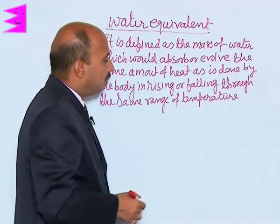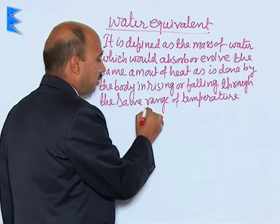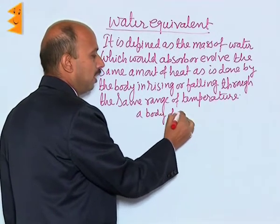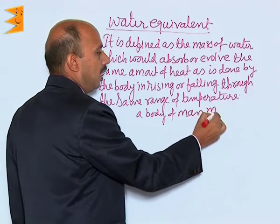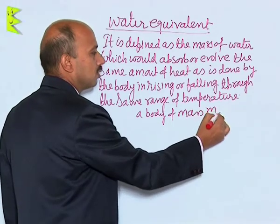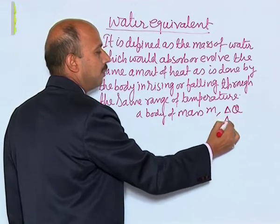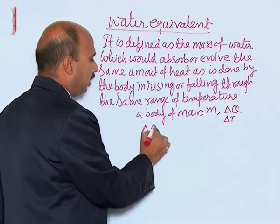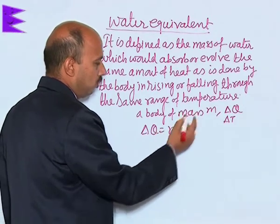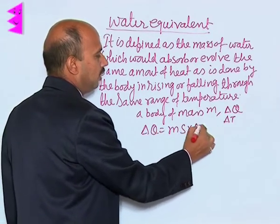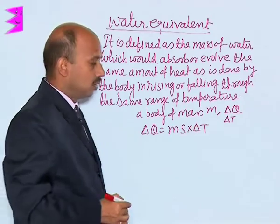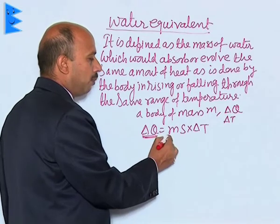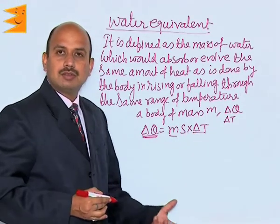Now, if you have taken a body of mass M, suppose a body of mass M is given delta Q heat and the temperature rises by delta T, then we can write delta Q is equal to M into S into delta T. This is the delta Q amount of heat given to the body of mass M and the temperature rises by delta T degree Celsius.